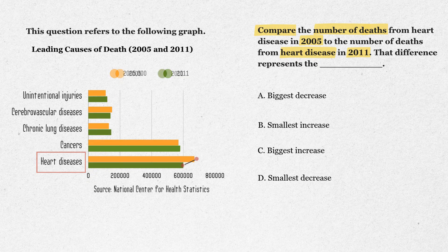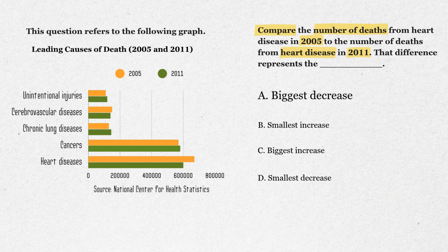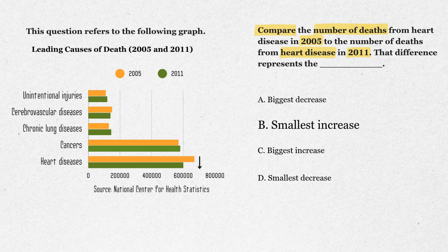Now let's test the answer choices. Option A says biggest decrease. That looks good — the drop from 650,000 to 600,000 is a large decrease. Keep that in mind. Option B: smallest increase. Well, heart disease didn't increase at all. It decreased. So that's out.